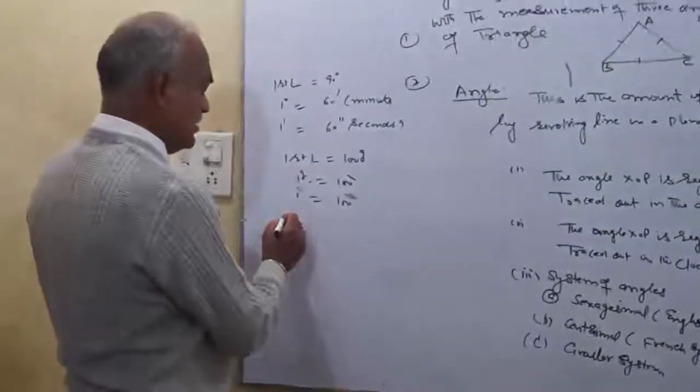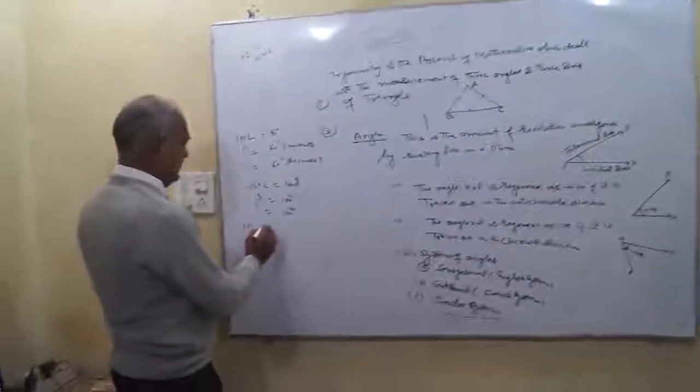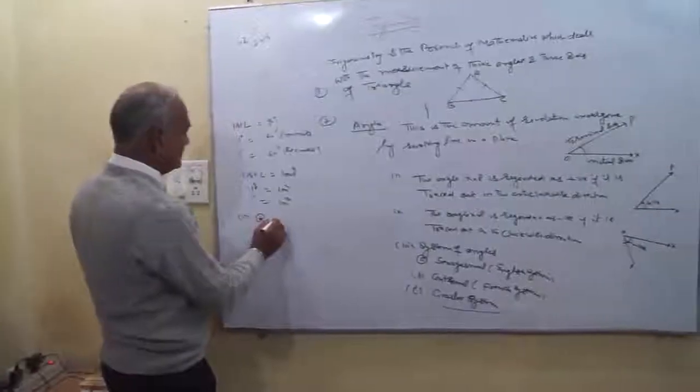Third is the circular system. In the circular system, the measurement of angle is radian.